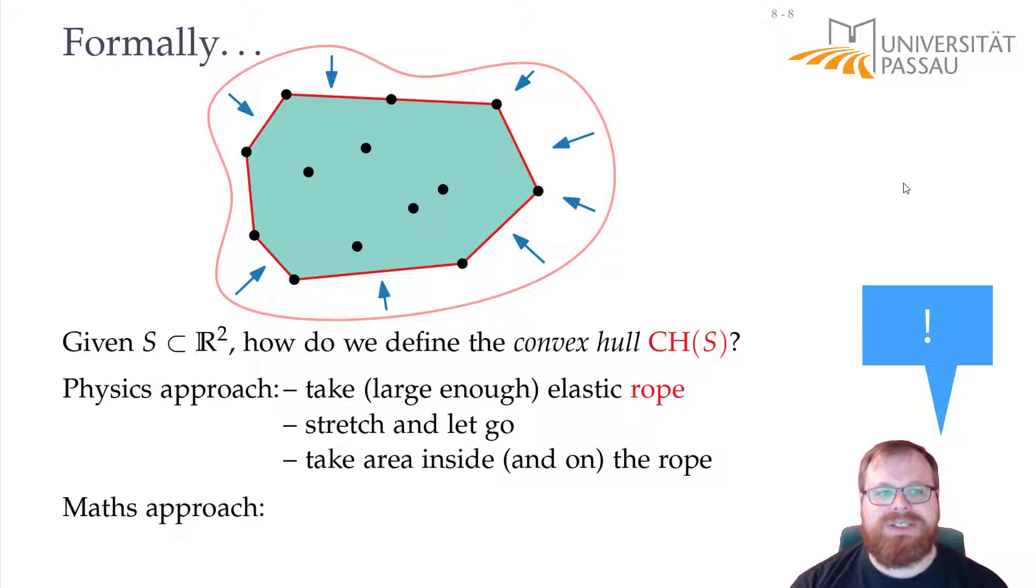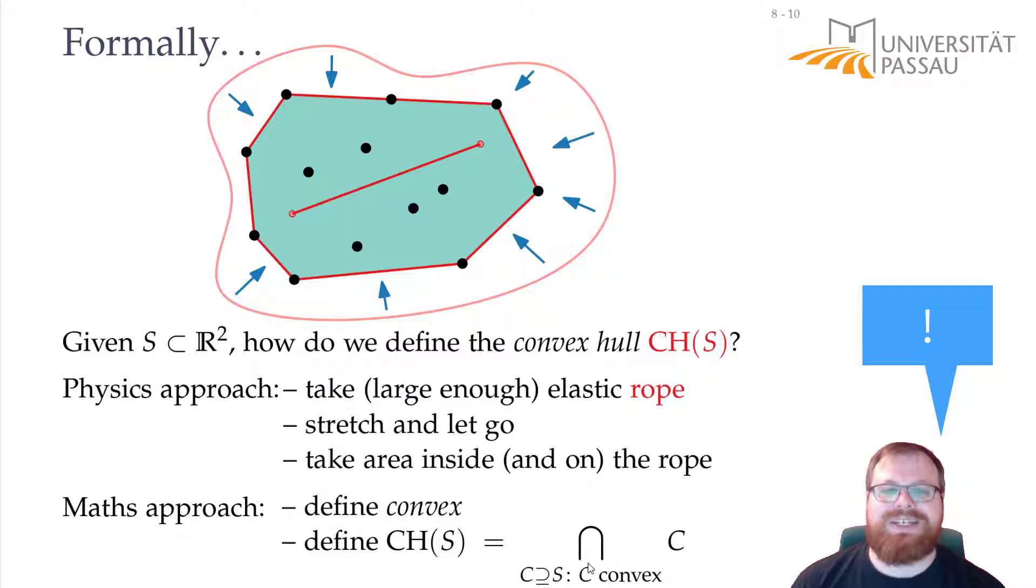For the mathematics approach, first we have to define what a convex set is. The mathematical definition of a convex point set is, if you take any two points in this point set and you take the straight line segment that connects them, then all these points on the straight line segment also lie in the point set. And what is the convex hull? The convex hull is just the smallest convex set that contains all the points that we are given. So, a mathematical way to write this down is that the convex hull is the intersection of all convex sets that contain our input point set.